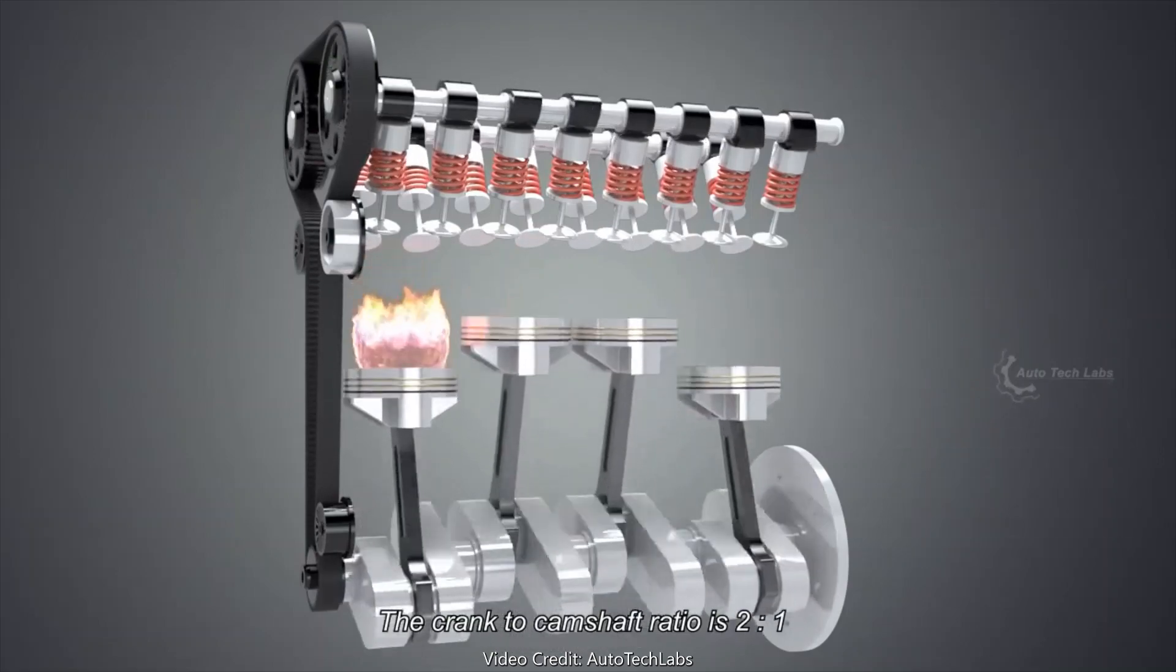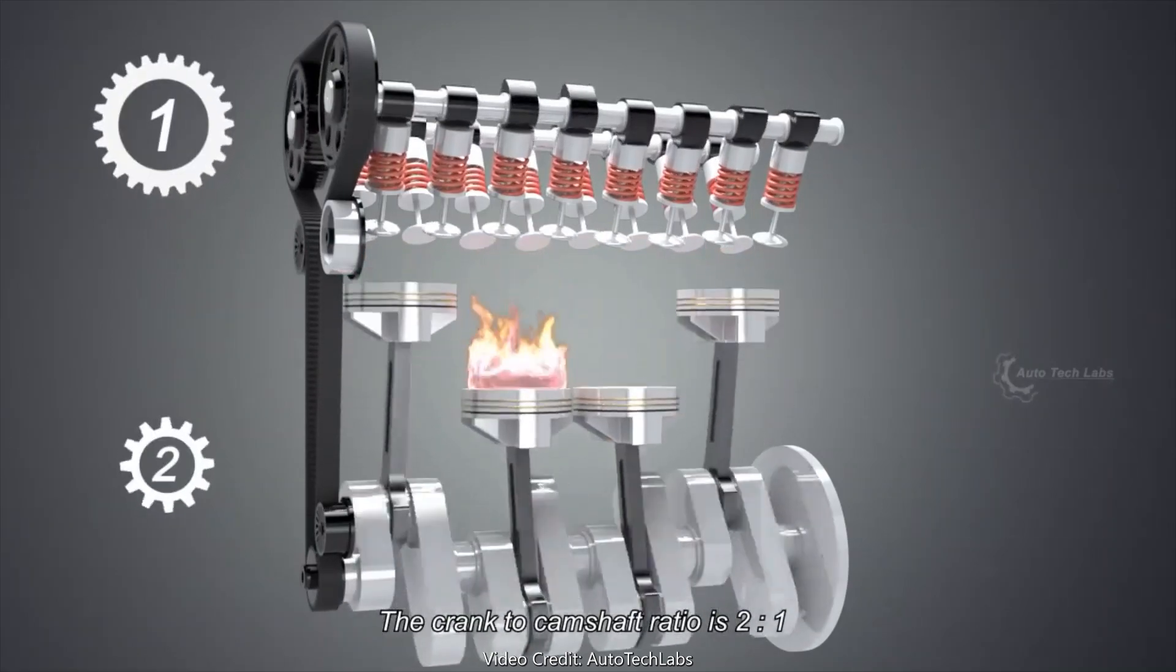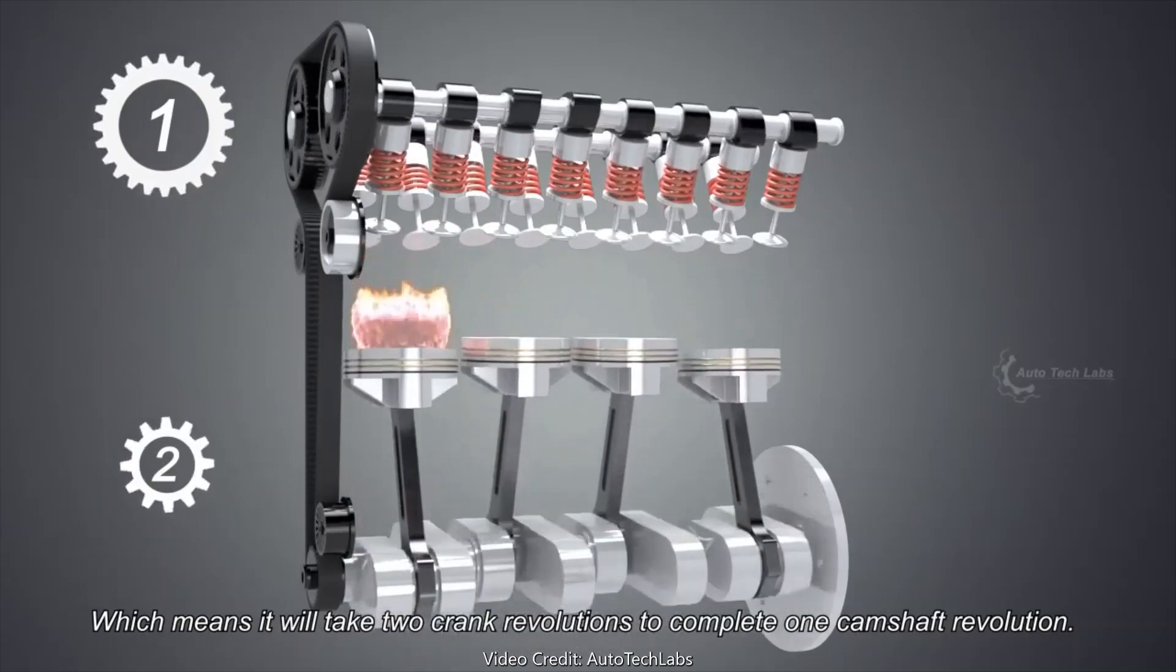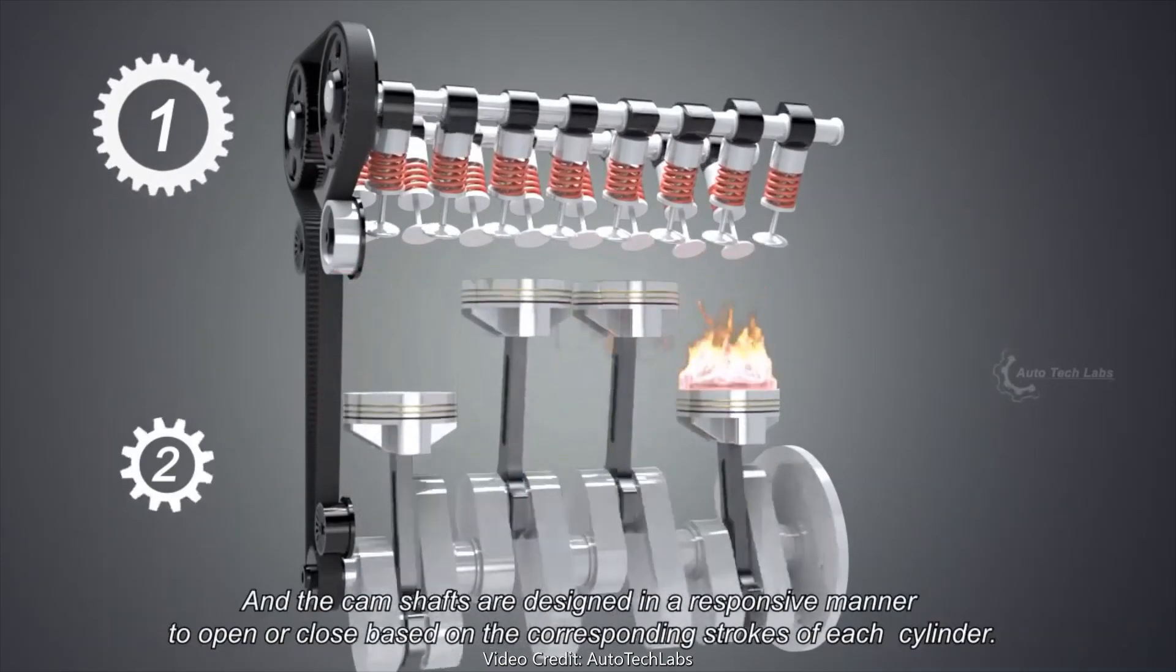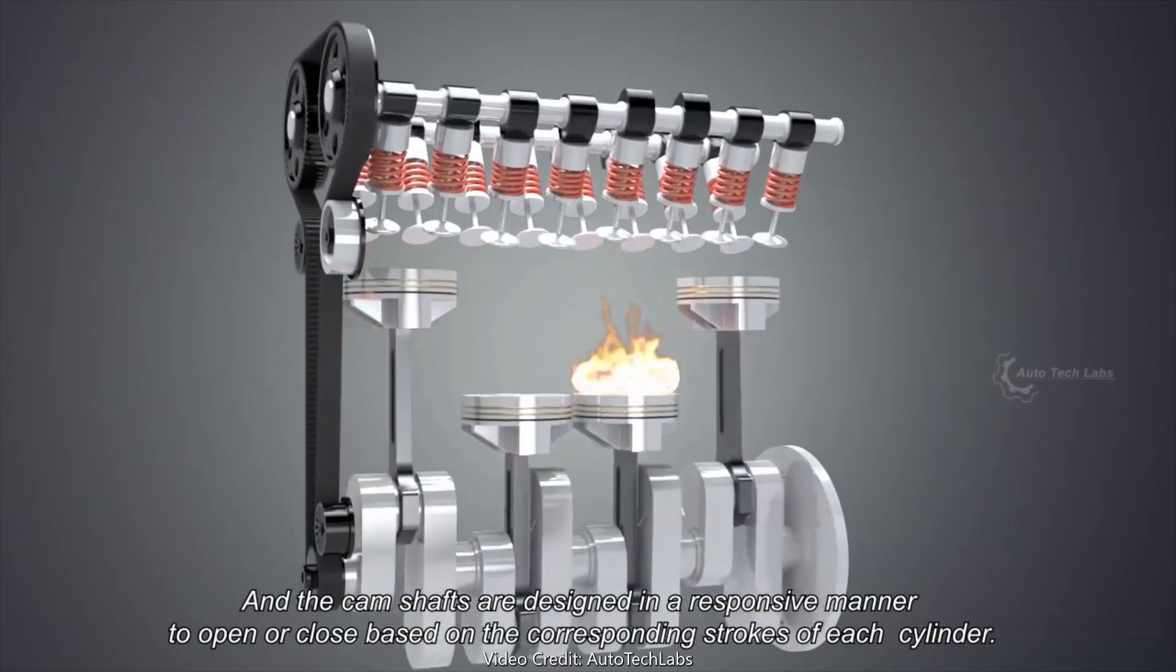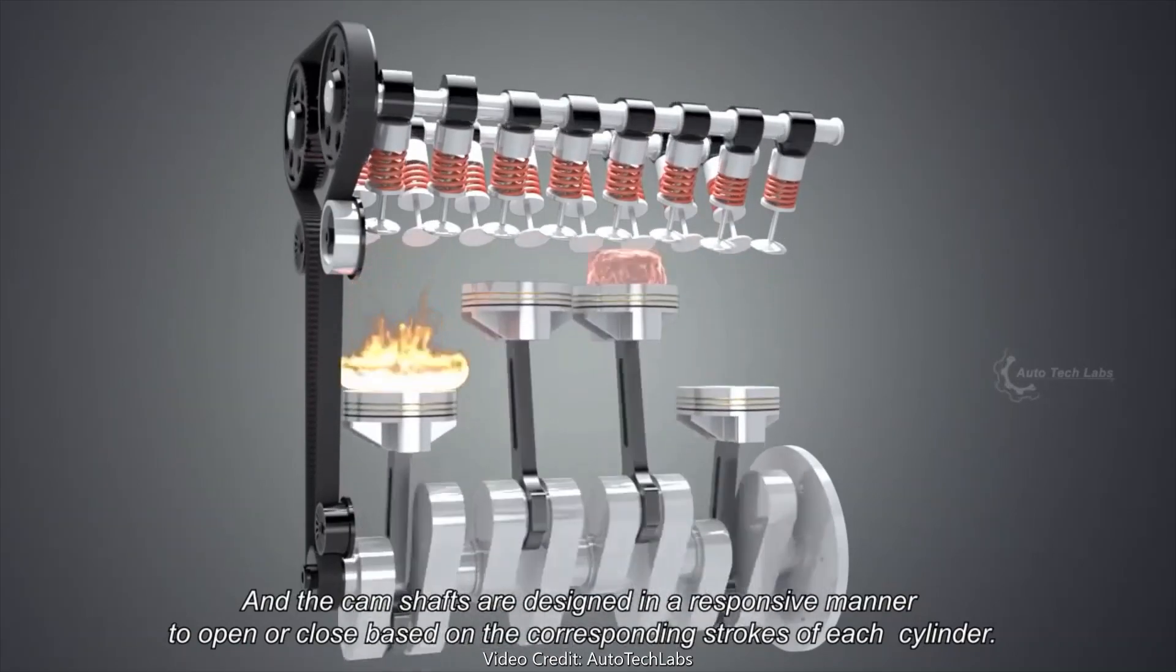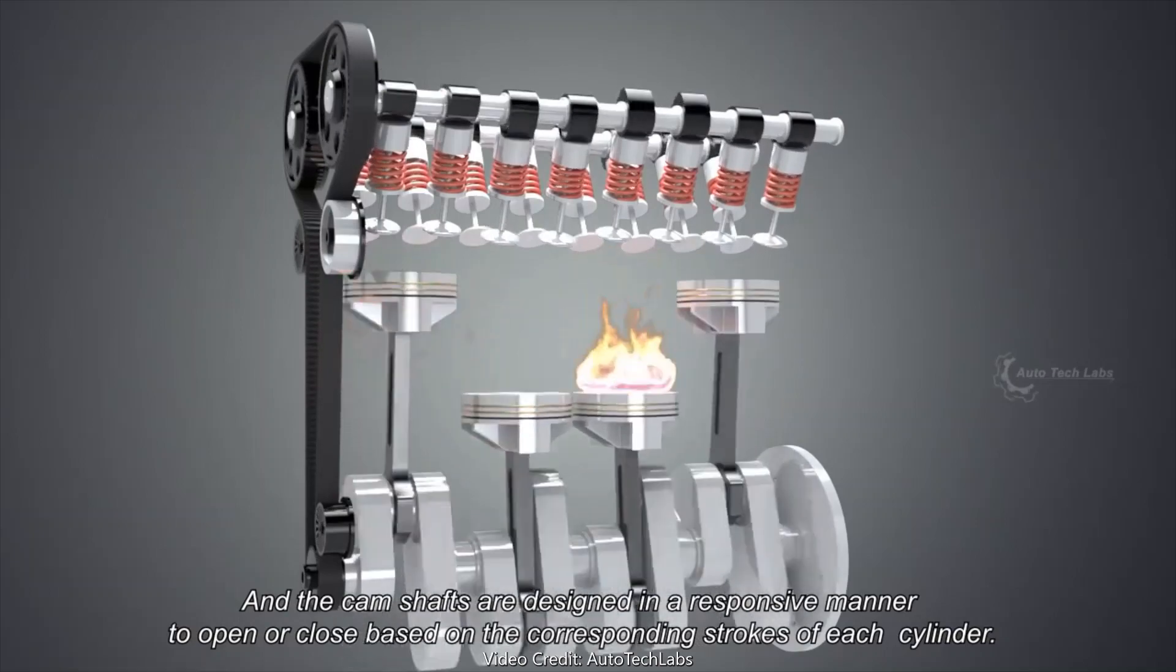The crank to camshaft ratio is 2 to 1, which means it will take 2 crank revolutions to complete one camshaft revolution. And the camshafts are designed in a responsive manner to open or close based on the corresponding strokes of each cylinder.